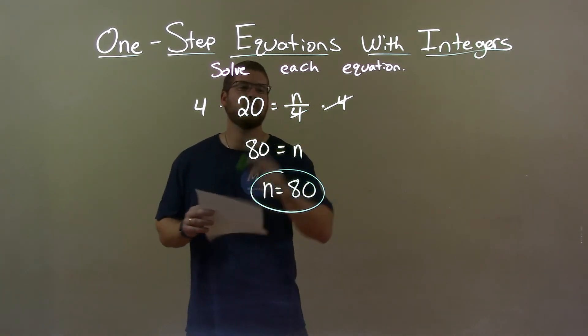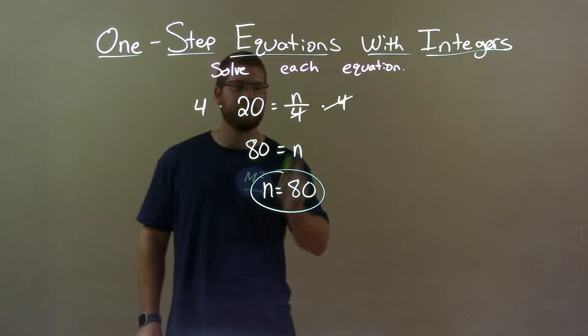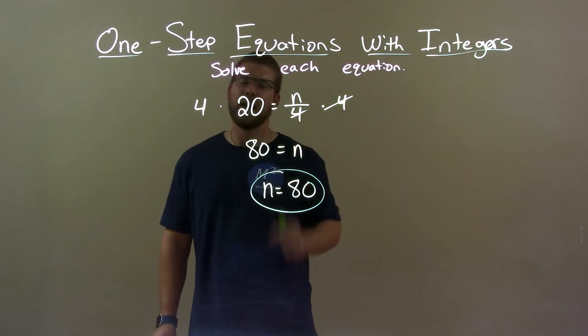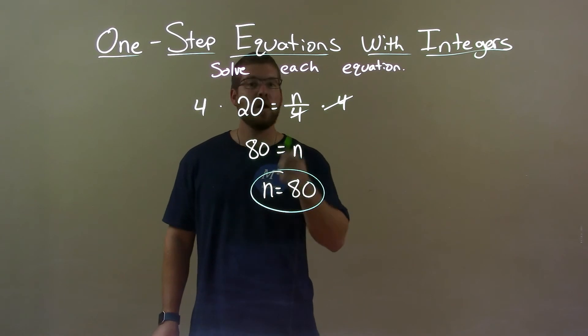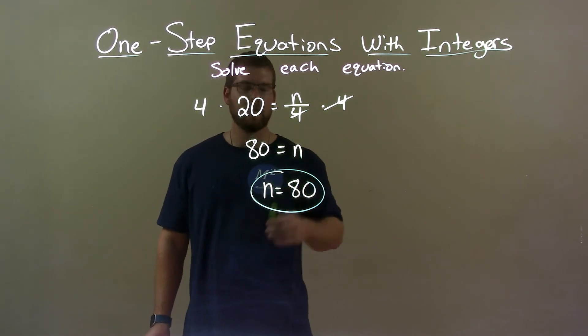Quick recap, we're given 20 equals n over 4 and we have to solve for n. Multiply both sides by 4 to get n by itself. 4 times 20 is 80 so again, final answer, n equals 80.